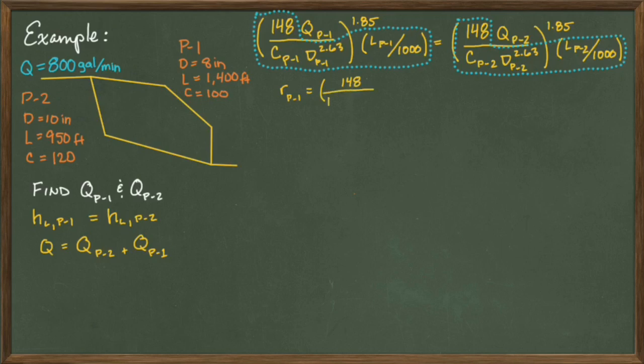Inserting the actual values for pipe 1, we get 148 divided by 100 times 8 to the 2.63 power, that whole quantity to the 1.85 power, and then we multiply that by the length of the pipeline of 1400 feet divided by 1000 feet. That, I compute as 1.2 times 10 to the minus 4th.